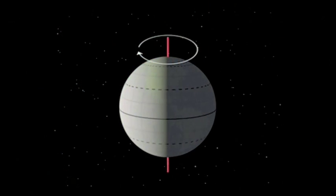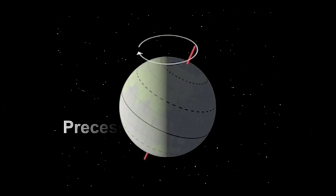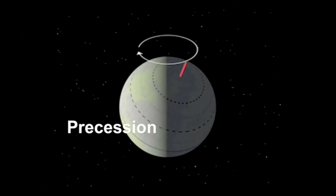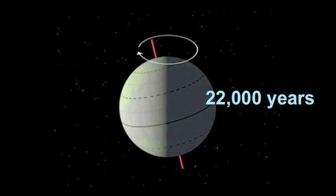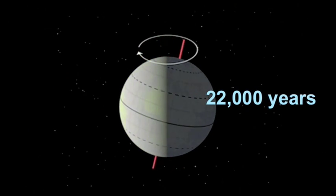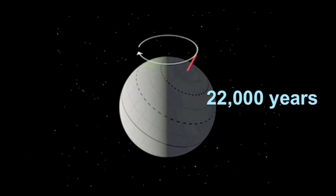There are three main factors. The first one is precession. This refers to slow change in the direction of the Earth's axis of rotation, much like a rotating top. The process takes about 22,000 years.